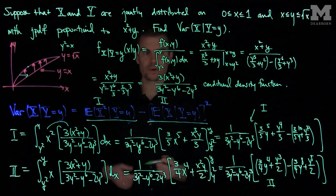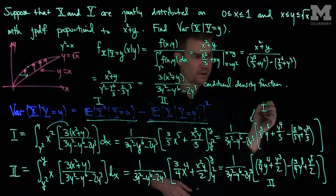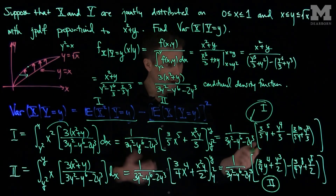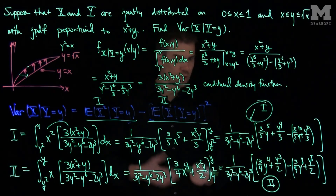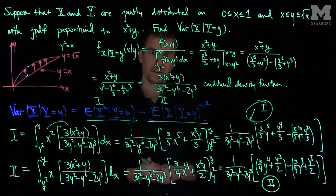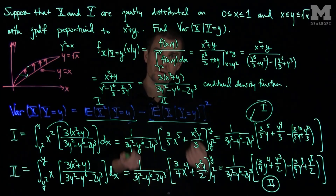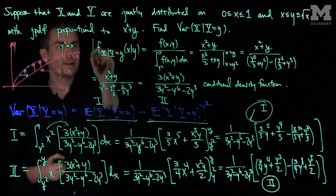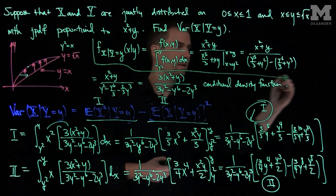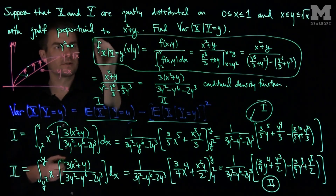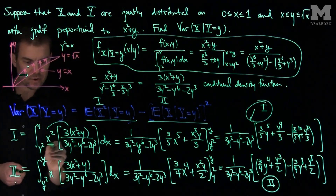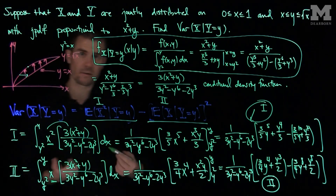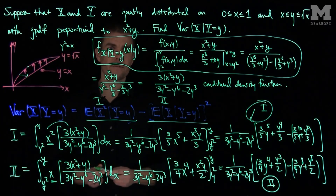The conditional variance is expression (1) minus expression (2) squared. This expression minus this expression squared gives the conditional variance of x given y equals little y. When doing these conditional variance problems, the first step is always to find the conditional density function. Once you have it, integrate against x squared for the first part of the variance, then integrate against x for the second part and square the result. Thank you very much.